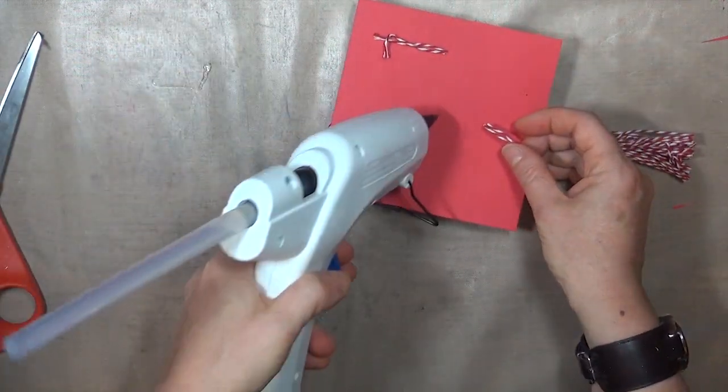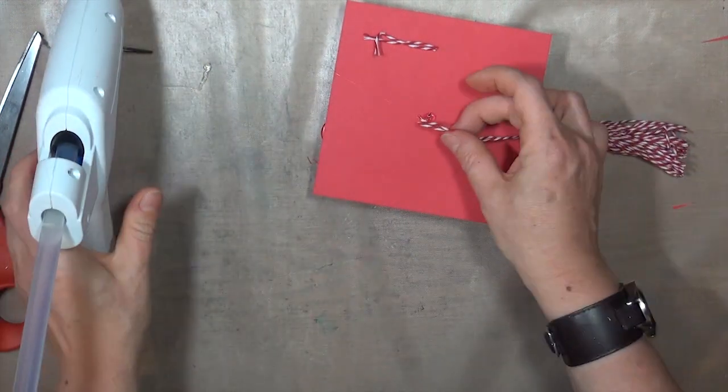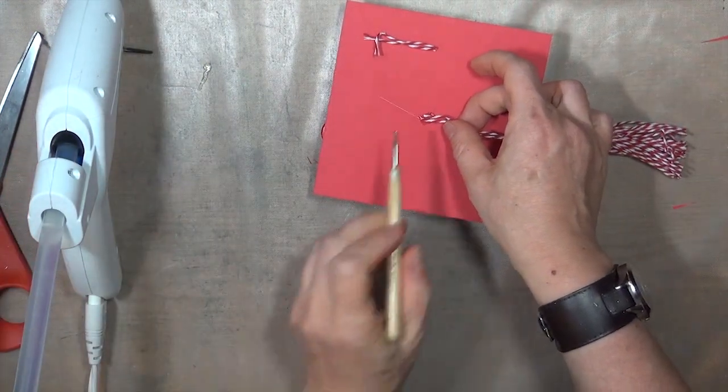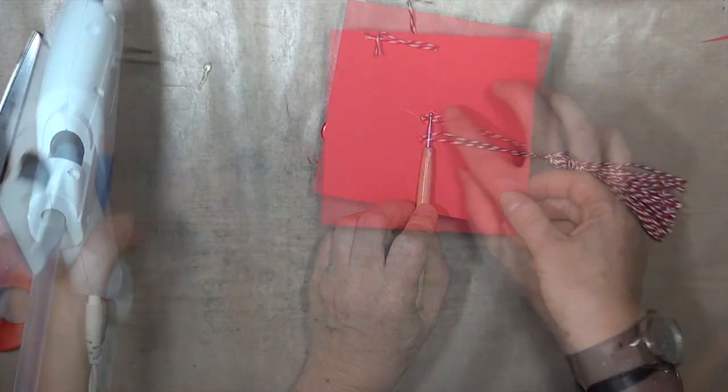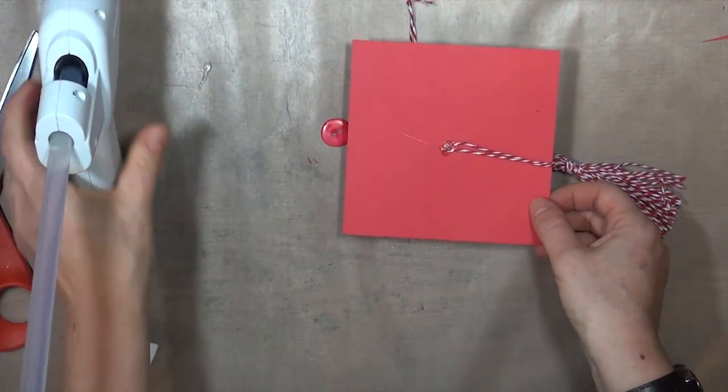I just want the tassel to hang off the lid at the side, and mine hangs off maybe half an inch to 3/4 of an inch. Then I'll use hot glue to attach the tassel to the box, and a little more hot glue to cover up that center spot with the button.